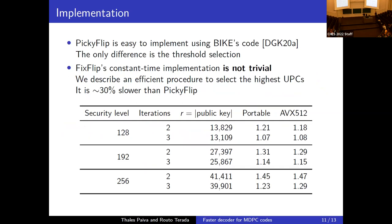Another comment noted that the parameter increase is between 5% and 10% compared to the original BIKE parameters, but emphasized that BGF likely has a potential problem, making direct comparison difficult.